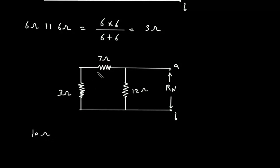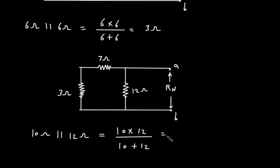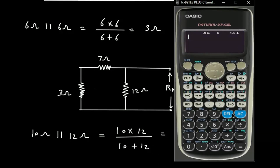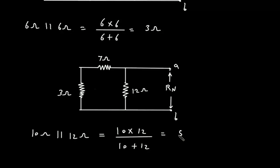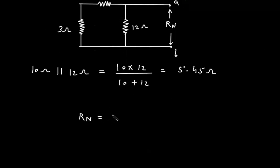Now this 10 ohm is connected in parallel with this 12 ohm. So 10 ohm parallel with 12 ohm gives 10 into 12 divided by 10 plus 12, which equals 5.45 ohm. This is the value for Rn. Therefore Rn is equal to 5.45 ohm.